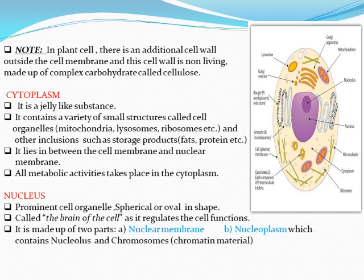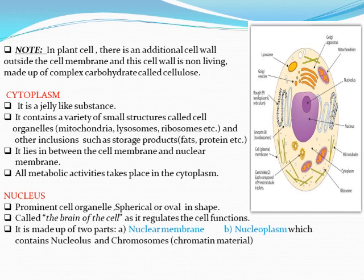Now we come to the nucleus — a prominent cell organelle. It is spherical or oval in shape and is called the 'brain of the cell.' It is called this because it regulates all cell functions. Just as our brain gives signals to our body to perform work, the nucleus gives signals to the cell about what function to perform.